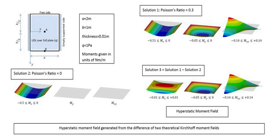Tensile testing is a fundamental materials science test in which a sample is subjected to uniaxial tension until failure. The results are commonly used to select a material for an application, for quality control, or to predict how a material will react under other types of forces. Properties directly measured via a tensile test include the ultimate tensile strength, maximum elongation and reduction in cross-section area. From these measurements, properties such as Young's modulus, Poisson's ratio, yield strength, and the strain hardening characteristics of the sample can be determined.